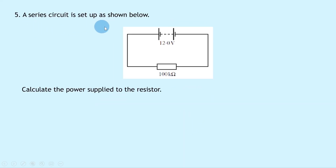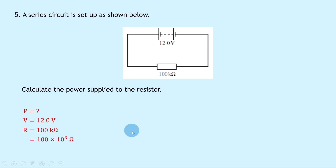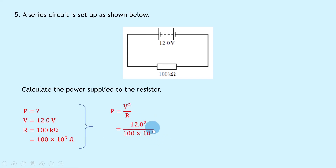Question 5 says a series circuit has a 12 volt battery and a 100 kilohm resistor — calculate the power supplied to the resistor. We know V is 12.0 volts and R is 100 times 10 to the 3 ohms. Using P equals V squared over R, substituting gives 12.0 squared divided by 100 times 10 to the 3, which gives 1.4 times 10 to the minus 3 watts.